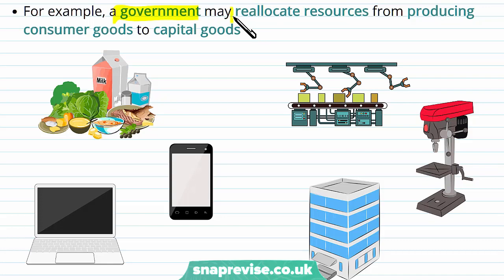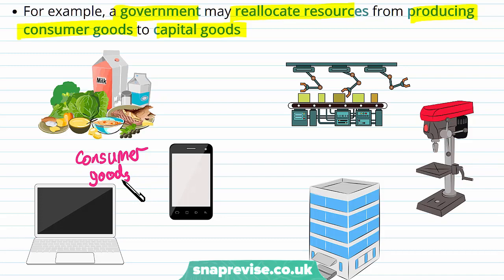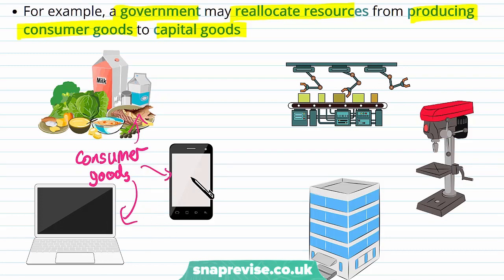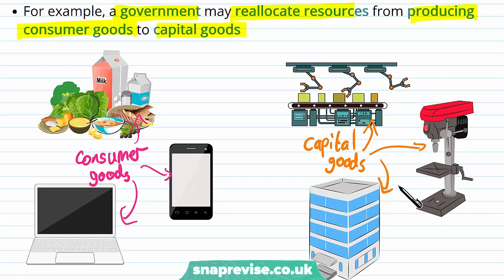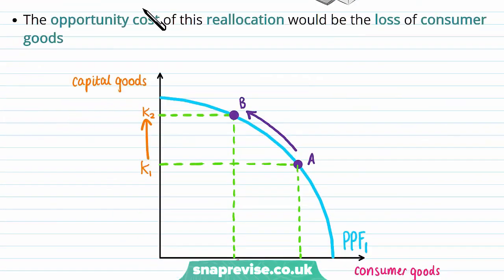Governments have a mandate to act on behalf of consumers, and therefore they will want to reallocate goods to increase consumer well-being. For example, a government may choose to reallocate resources from producing consumer goods to capital goods. Consumer goods are goods which provide a direct level of utility to consumers — things like food and technology. Consumer goods can be broken down into durable and non-durable goods. Capital goods — such as machinery, tools, and buildings — are related to the production of consumer goods that we desire. The opportunity cost of this reallocation would be the loss of consumer goods.